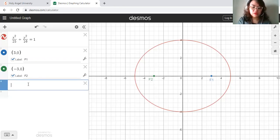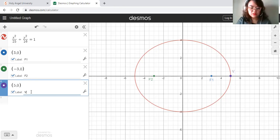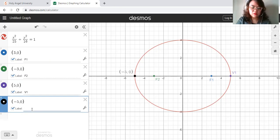And then from the equation, we also have the vertices at 5, 0. At the end of the major axis, it's longer there. And then we label this as V1. Plot the negative vertex, label it V2.